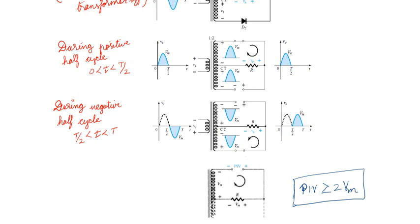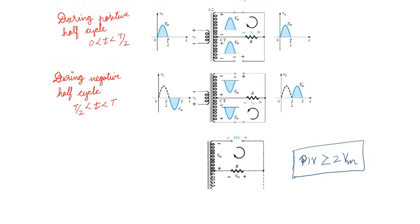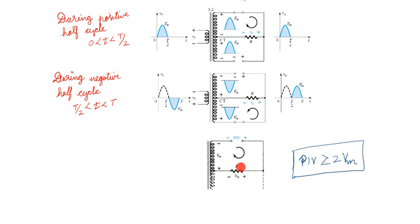An important thing about center-tap transformer peak inverse voltage: it is 2×Vm. During the negative half cycle, D2 is conducting, so the voltage at that point is Vm. And the upper half of the secondary always has Vm. So the voltage across the non-conducting D1 is Vm + Vm = 2Vm. Therefore peak inverse voltage must be greater than 2×Vm. This is a very important difference: for the bridge type, PIV > Vm; for the center-tap transformer type, PIV ≥ 2Vm.